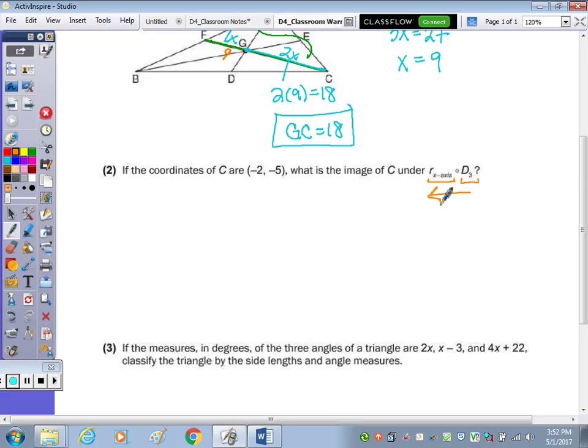Remember, you work right to left. So if I start with the point (-2, -5), and then we're going to dilate by 3. Dilation means we're going to multiply the coordinates by 3. Negative 2 times 3 is negative 6. Negative 5 times 3 is negative 15.